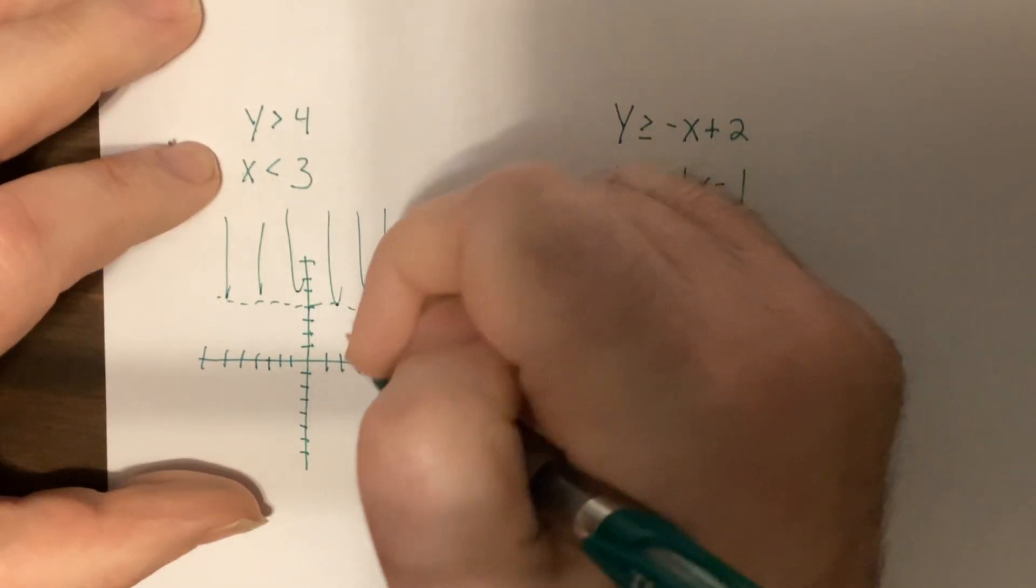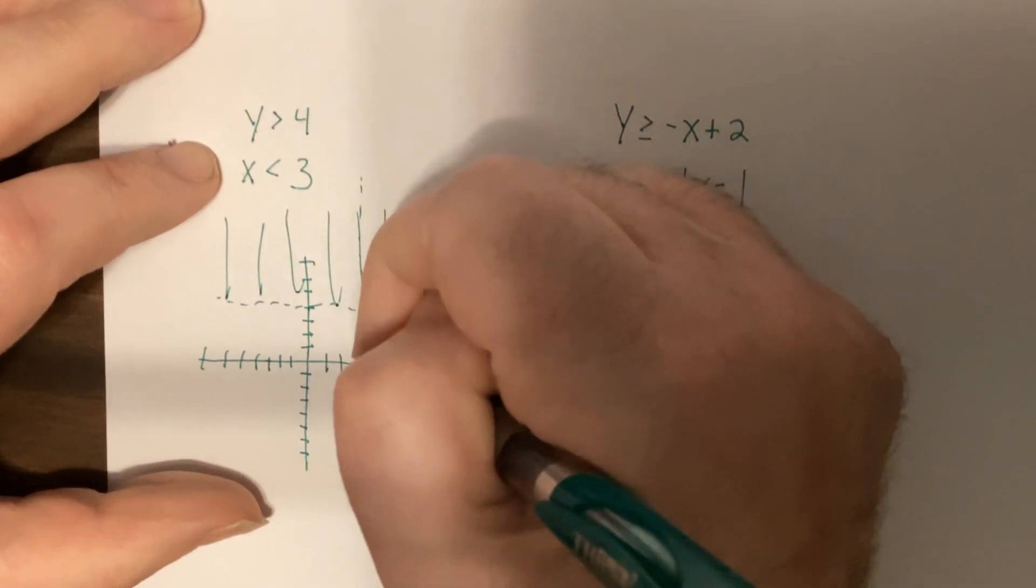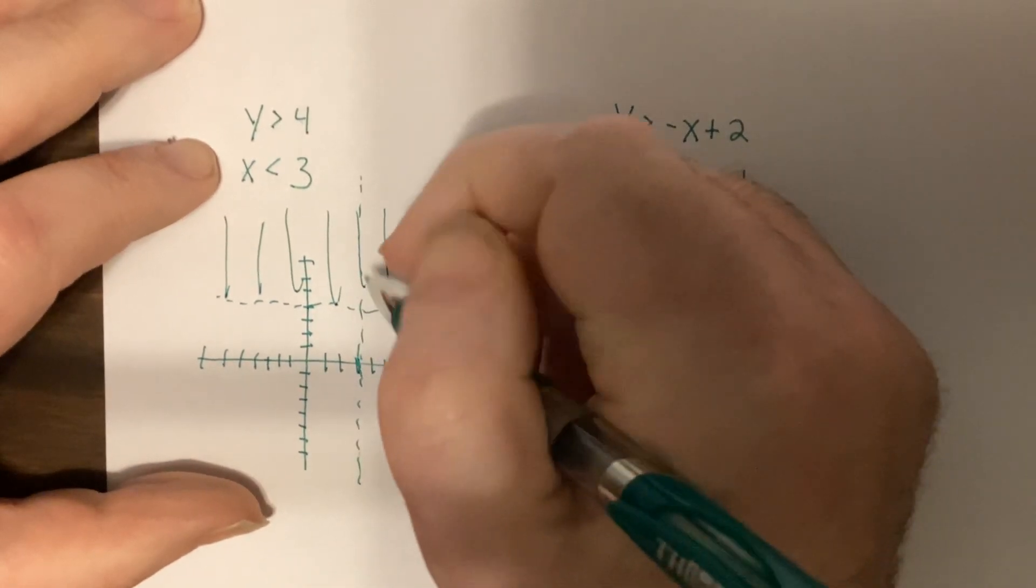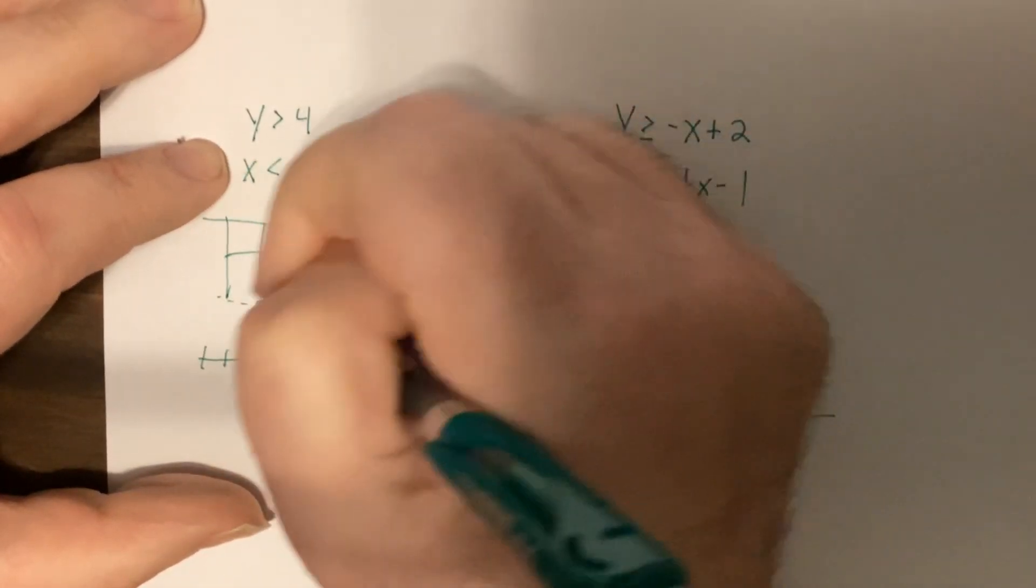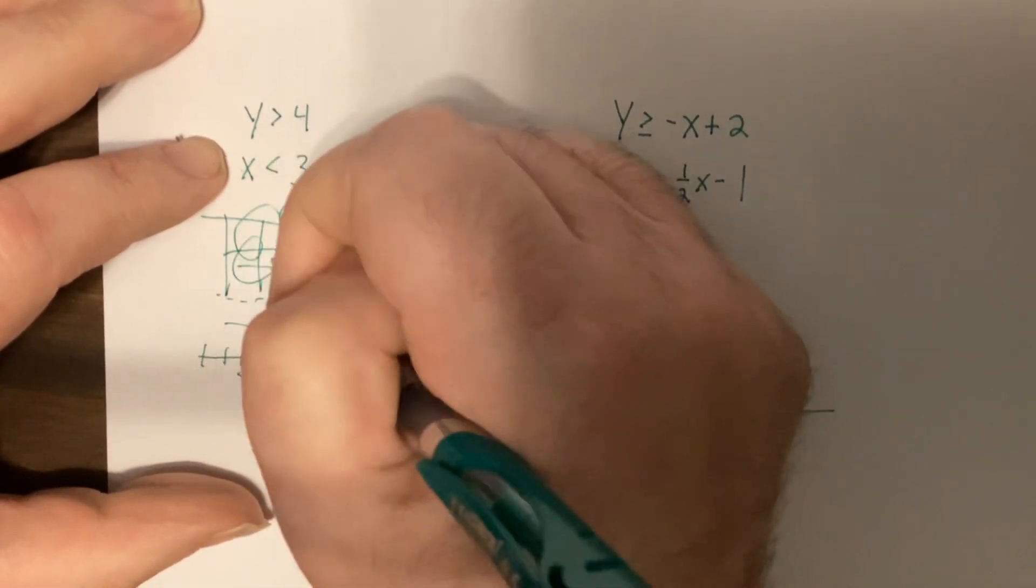X is less than three. X equals a number is vertical. Slope is undefined. Again, it's dashed. Goes through three, a little bit off. And less than is this way. So the answer is here where there's a checkerboard pattern.